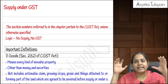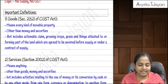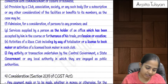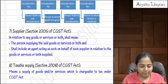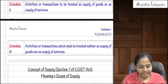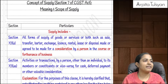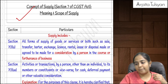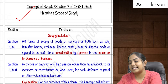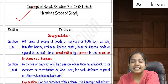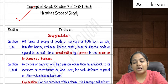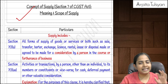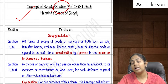We predominantly need to understand whether a particular transaction is a supply or not. We have important definitions to refer to. Going to section number 7, from where the main chapter starts — section 7 talks about the meaning and scope of supply. Specifically, section 7(1)(a), 7(1)(aa), 7(1)(b), section 7(2), and section 7(3) are super important.